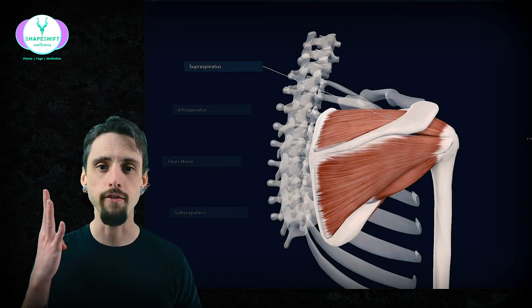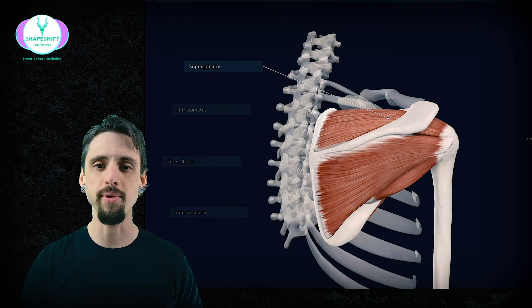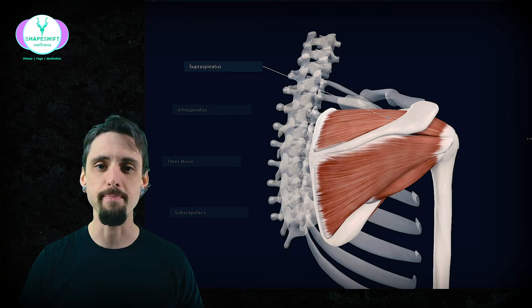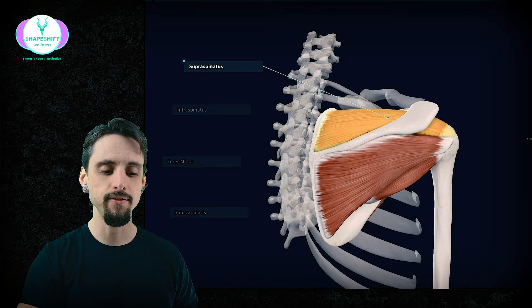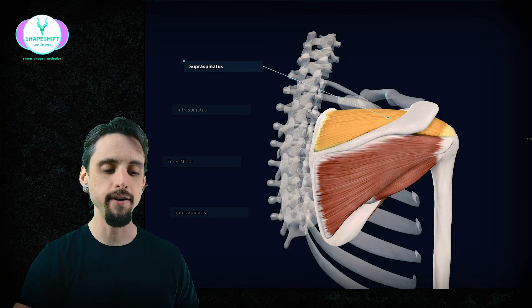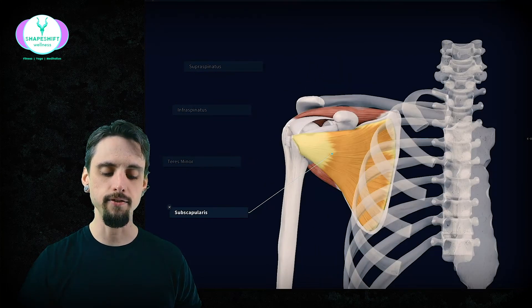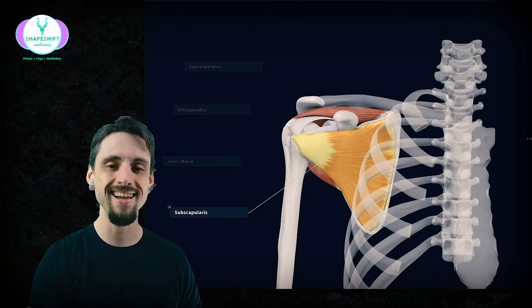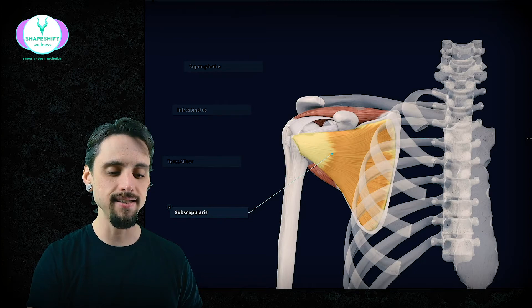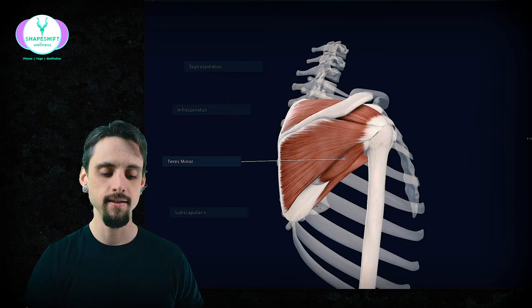So broad overview, there are four rotator cuff muscles and they form an acronym that we can use to memorize all four of these muscles. S for supraspinatus, I for infraspinatus, T for teres minor, and S for subscapularis. So the acronym is SITS.